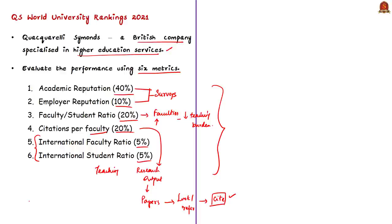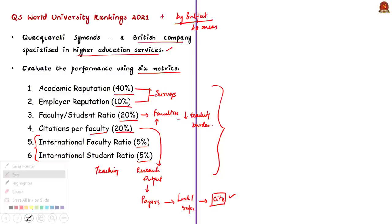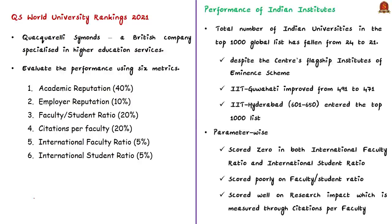Apart from overall rankings, there is also QS World University Rankings by Subject, which identifies the world's strongest universities in 48 individual subject areas. Coming to the news article, it discusses key rankings of Indian universities in QS World University Rankings 2021. The total number of Indian universities in the top thousand global list has fallen from 24 to 21. The central government announced the Institutes of Eminence scheme to boost Indian institutions in global rankings, but despite government efforts, the numbers have dropped.